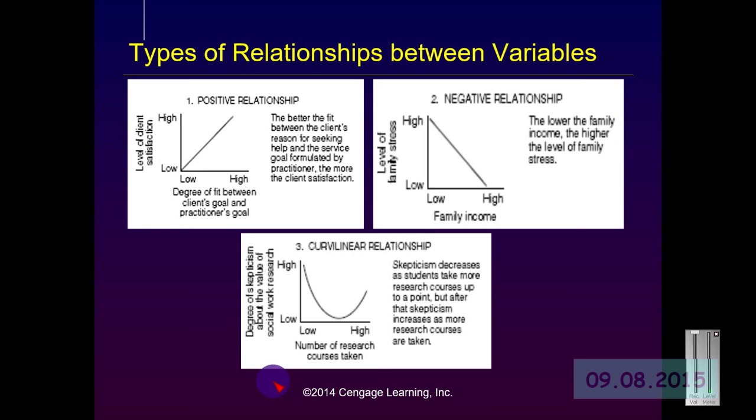In the second image of the slide, it measures the level of family income against the level of family stress — as family income goes up, family stress goes down, or vice versa. Charts that examine the linear relationship between variables are read from left to right: a line sloping upward indicates a positive relationship, and a line sloping downward indicates a negative relationship. The third box shows a curvilinear relationship, where skepticism decreases as students take more research courses, but only up to a point — after which skepticism begins to increase again.